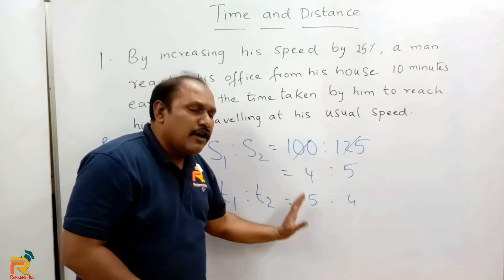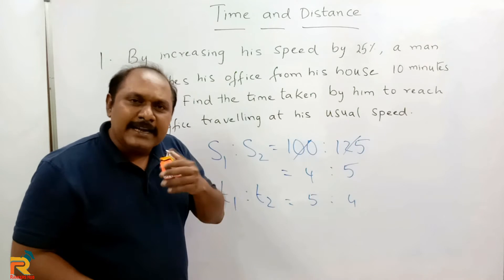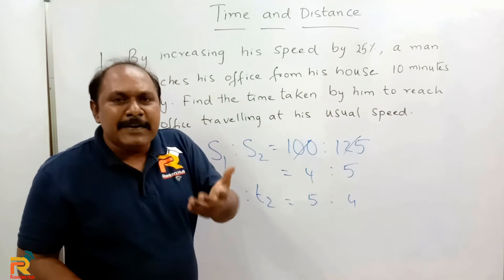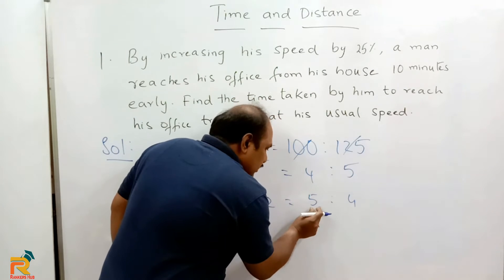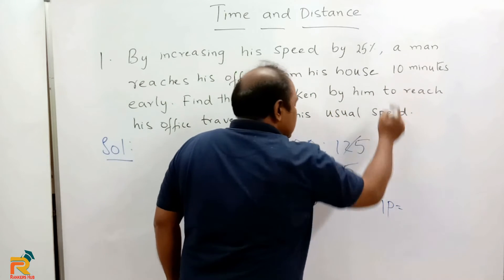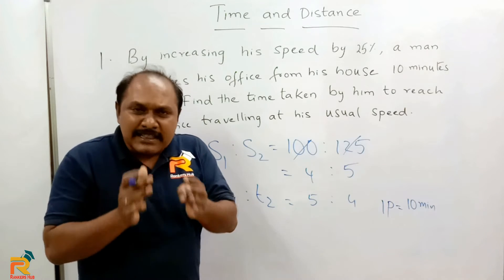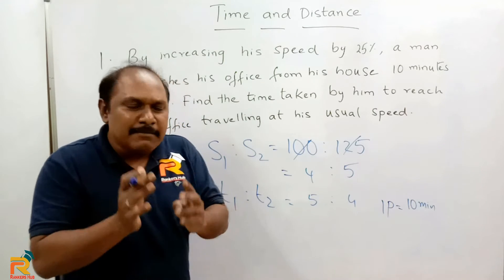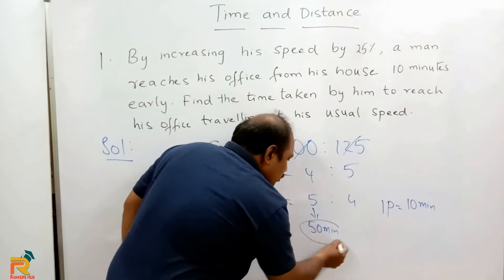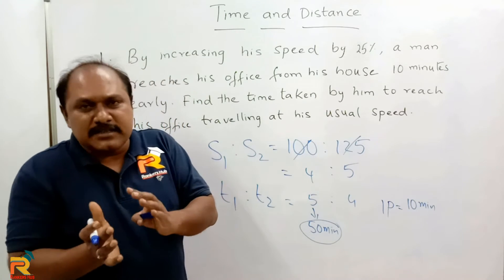So when speeds are in the ratio 4:5, times are in the ratio 5:4. The 5 parts represent his usual time and 4 parts represent his new time. The difference is 1 part, which equals the 10 minutes he saved. So if 1 part = 10 minutes, then 5 parts = 50 minutes. His usual travel time is 50 minutes — the same answer, found in seconds!